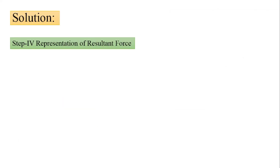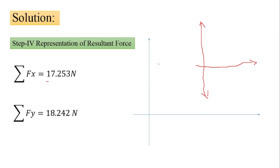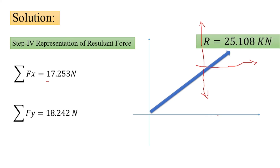To represent the resultant, check the signs. The summation of Fx is positive, so the horizontal component points to the right. The summation of Fy is also positive, so the vertical component points upward. Therefore the resultant lies in the first quadrant. Show the resultant with its magnitude of 25.108 kN and the angle theta of 46.595 degrees.